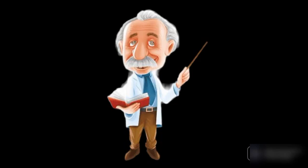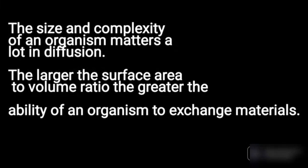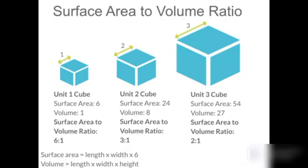The size and complexity of an organism matters a lot in diffusion. The larger the surface area to volume ratio, the greater the ability of an organism to exchange materials. From what we have seen here, three cubes were shown: the unit one cube, the unit two cube, and the unit three cube. When surface area increases and volume increases, the surface area to volume ratio decreases.